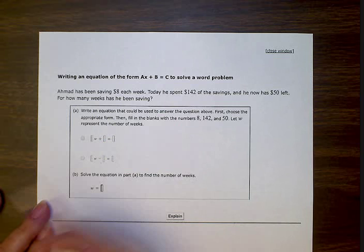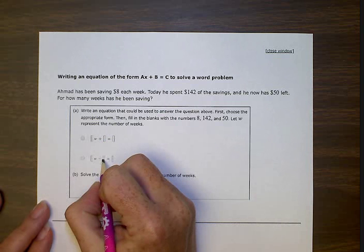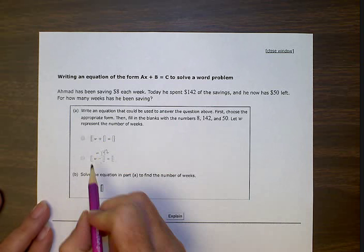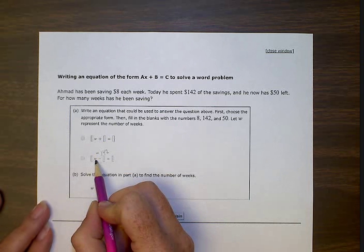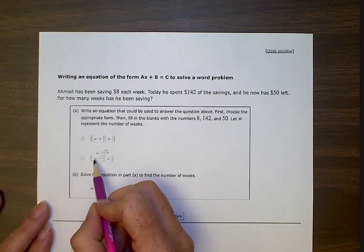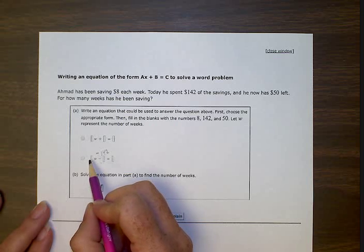So I think since he spent that $142, that should go right here. So subtract $142. And we don't know how many weeks he's been saving, but every week he got $8. So every week he got another $8. So we had $8 the first week and $16 the second week.